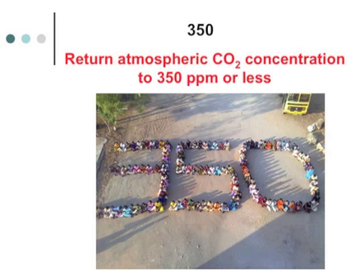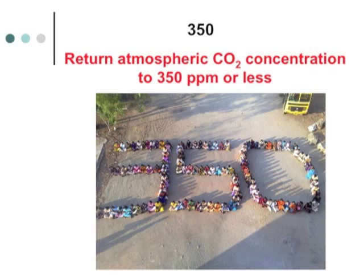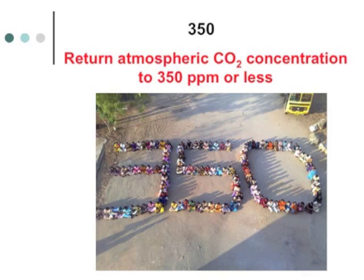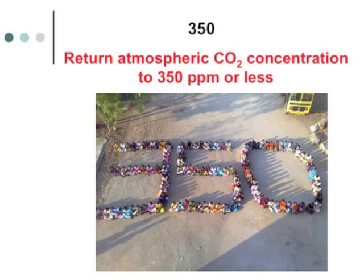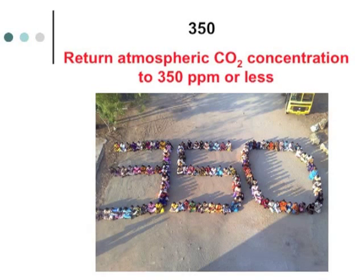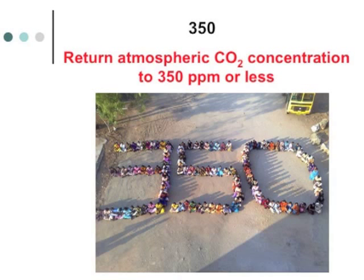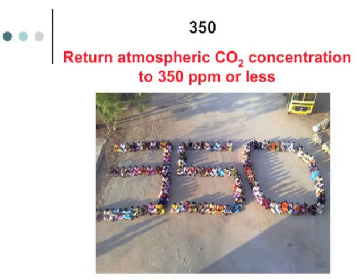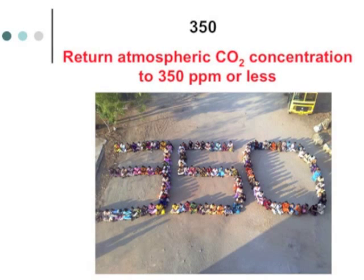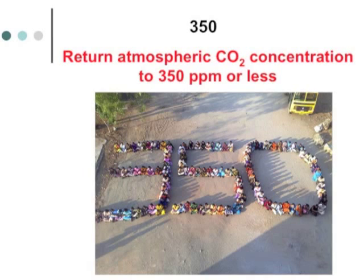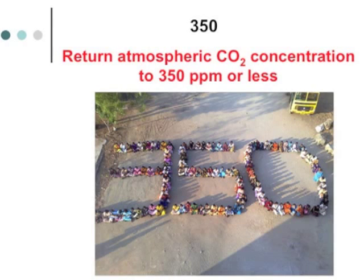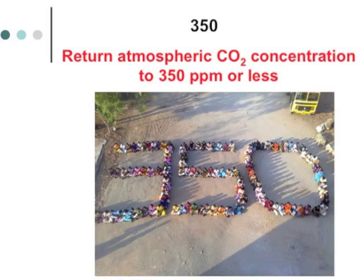350.org is an organization dedicated to climate change mitigation — you can find them online at 350.org. They use a different way to define the carbon mitigation goal: to lower the atmospheric CO2 concentration to 350 ppm or less. The value now is about 394, so the goal is to bring it down to 350. Based on scientific evidence, they believe anything above 350 ppm is dangerous.